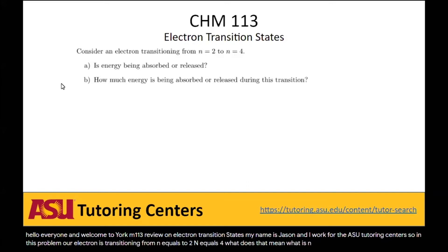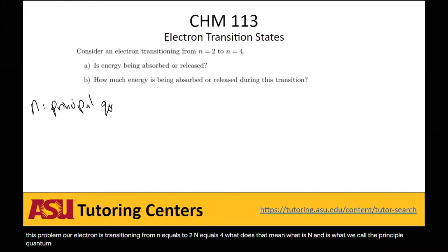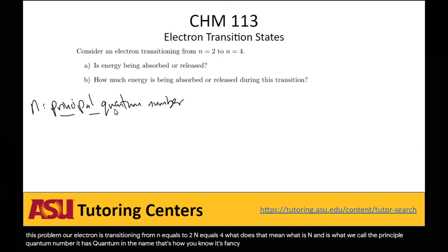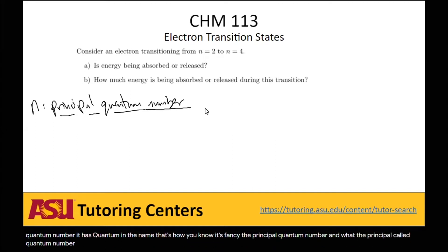What is n? n is what we call the principal quantum number. The principal quantum number essentially denotes the orbit the electron is in.